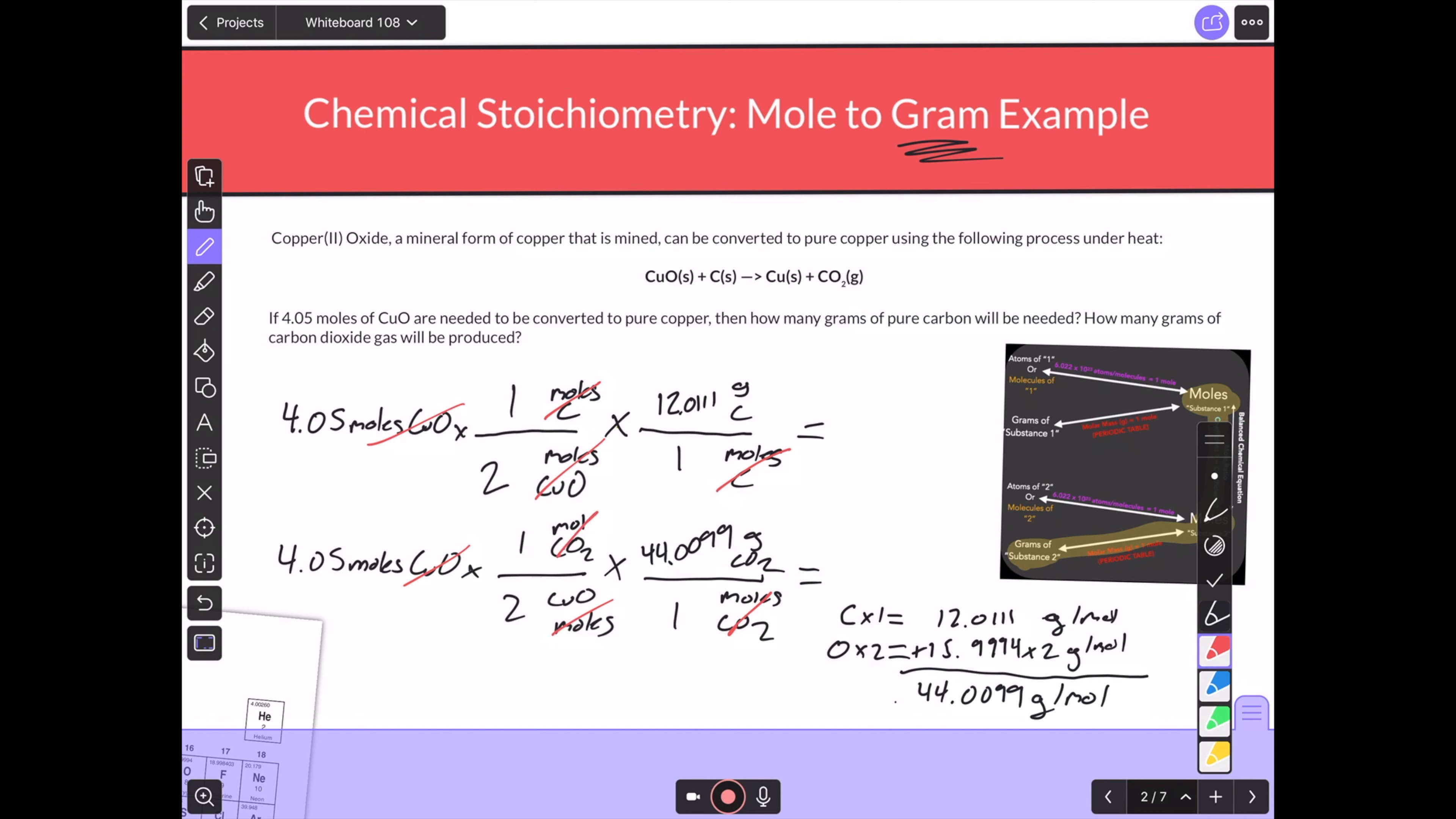And I should be able to just do my math for both these problems and get the answer that I desire. So for the top, I'm going to do 4.05 divided by 2 times 12.0111. And that gives me to three significant digits, 24.3 grams of carbon.